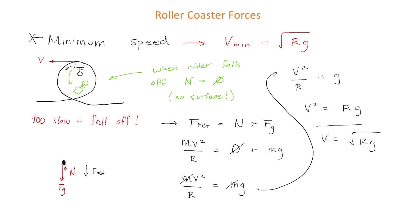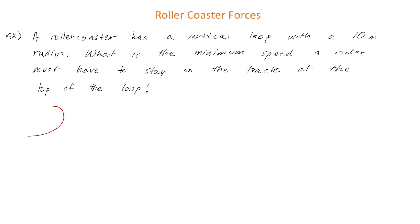Simplifying and rearranging for v, we find v = √(rg). This equation is great because it's super simple — all you need is the radius. Let's do a quick example: a roller coaster has a vertical loop with a radius of 10 meters. What is the minimum speed so the rider doesn't fall off the track?